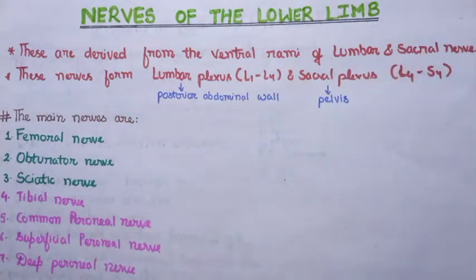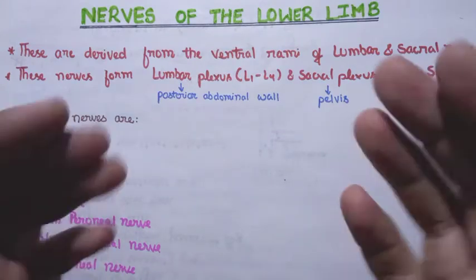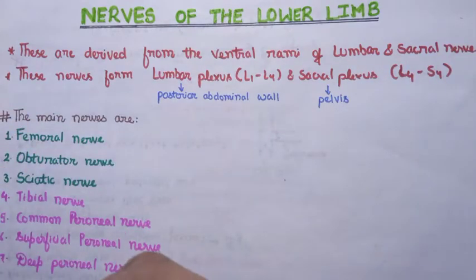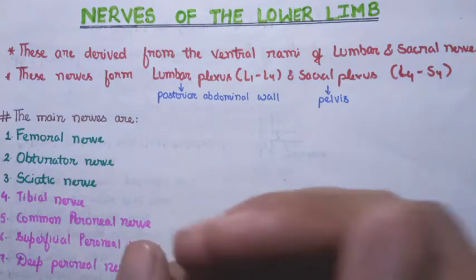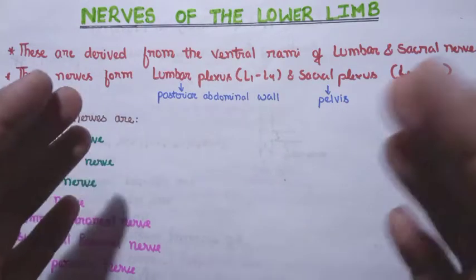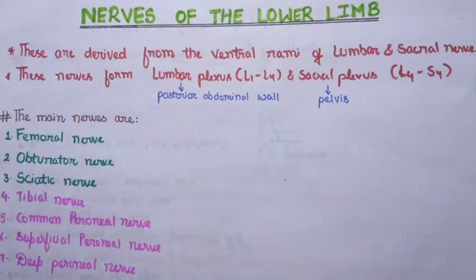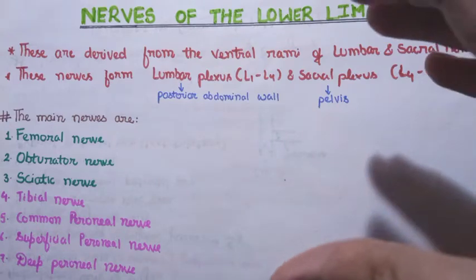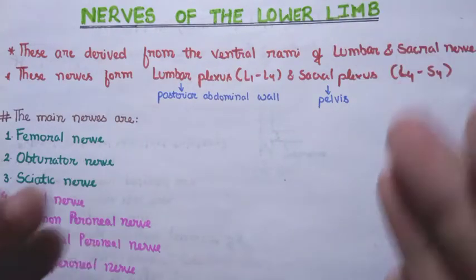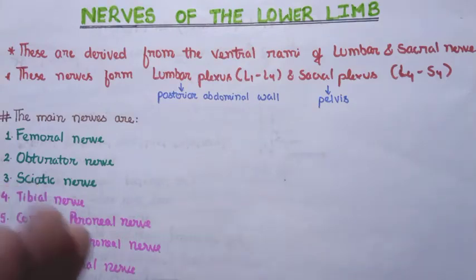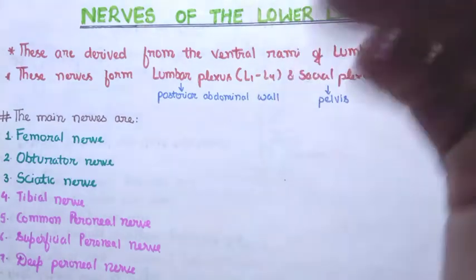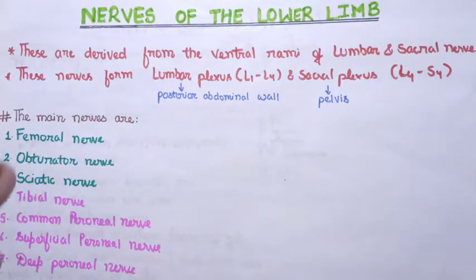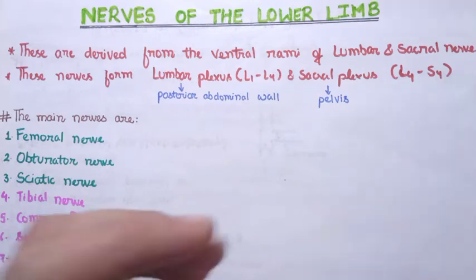These nerves are derived from the ventral rami of the lumbar and sacral plexus. Regarding what you understand by the ventral rami — if you see the formation of the typical spinal nerve, I have already uploaded a detailed video which you can check in the video section of our channel. From the different rootlets the typical spinal nerve is formed, and when it is formed it divides into two rami: the ventral rami and the dorsal rami. The ventral rami is responsible for the formation of the plexus.